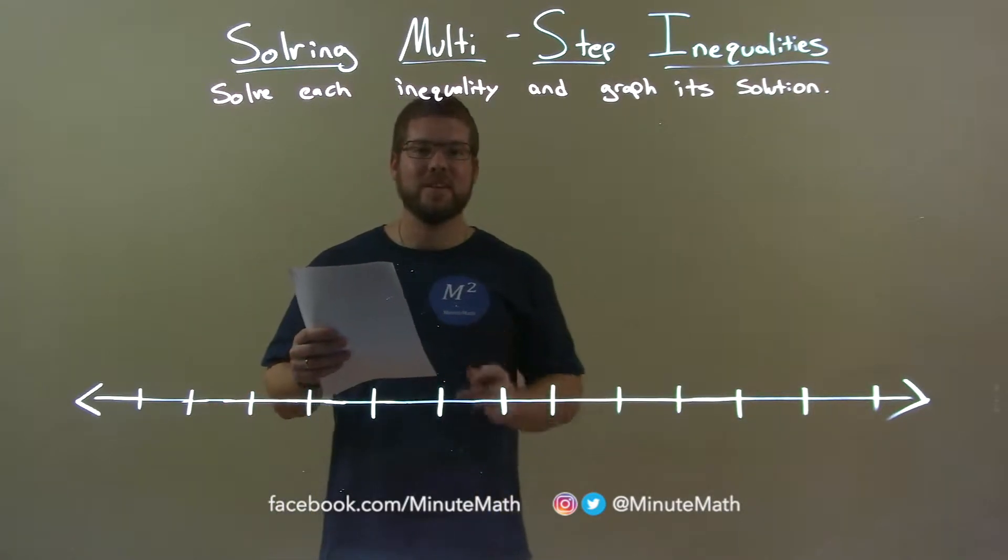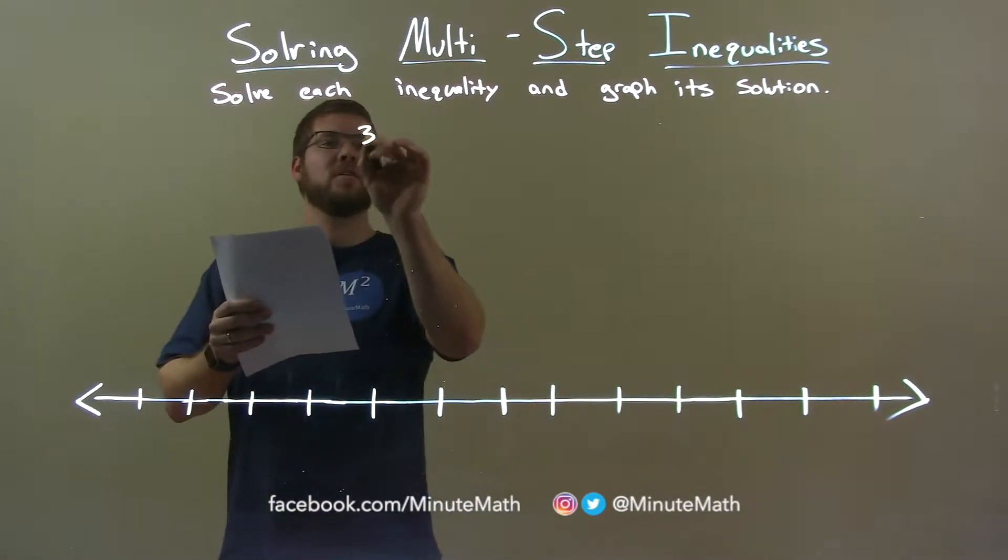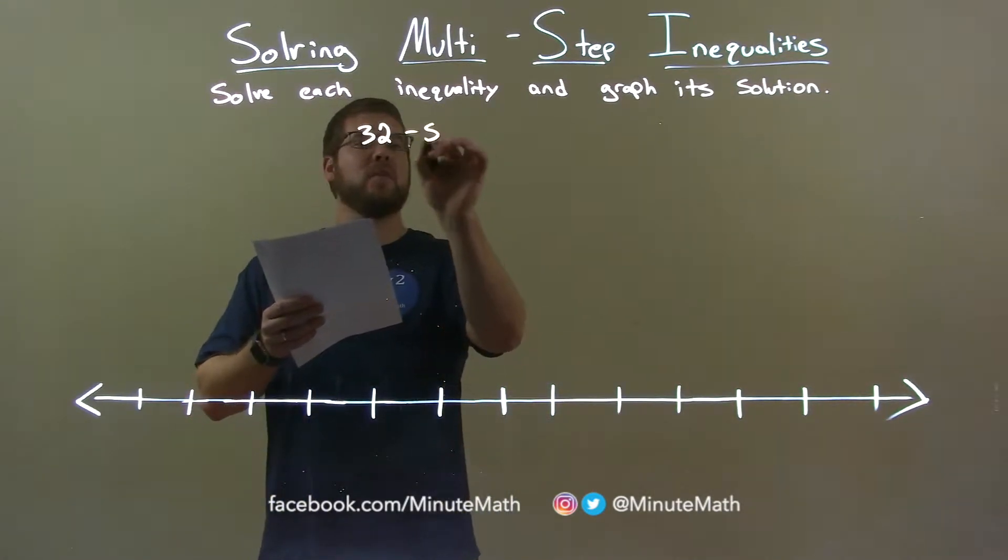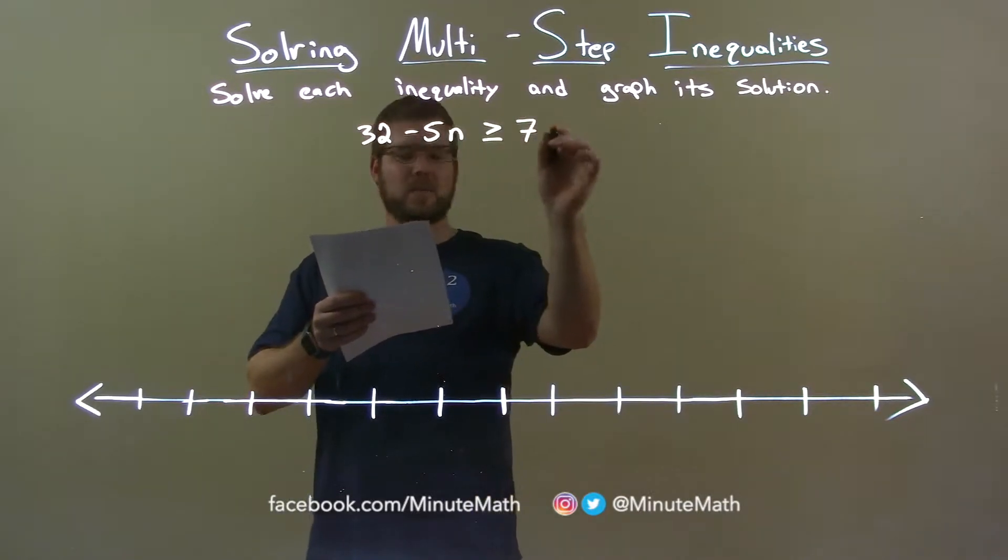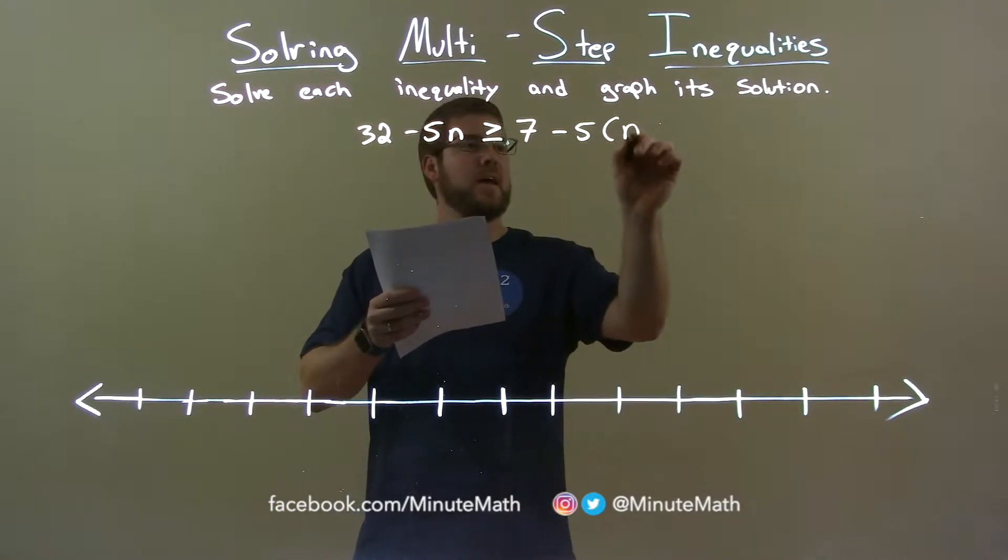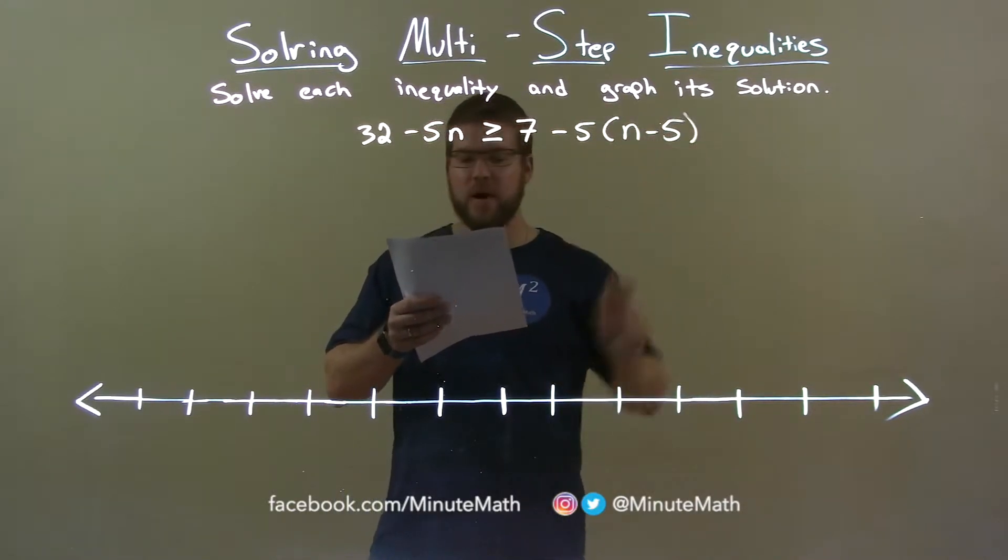If I was given this inequality, 32 minus 5n is greater than or equal to 7 minus 5 times n minus 5.